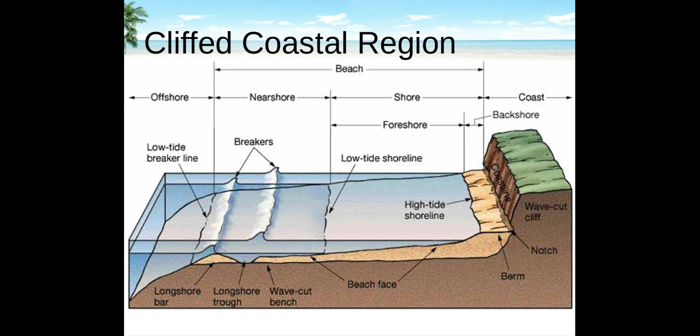Above the beach face are low ridges called berms. In North America, the zone of footprints and beach umbrellas during summer is the summer berm — wave energy is typically lower in summer, allowing sand to pile onto the beach. Behind the summer berm is typically a low ridge representing the winter berm. Higher winter storm energy moves the summer berm sand off the beach. There may be a zone of dunes behind the berms from onshore winds. This area behind the berms, always above the ocean in normal conditions, is known as the backshore.